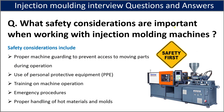The next question is: what safety considerations are important when working with injection molding machines? Safety is the first factor to consider. Key considerations include proper machine guarding to prevent access to moving parts during operation, use of personal protective equipment, training on machine operation and emergency procedures, and proper handling of hot materials and molds.